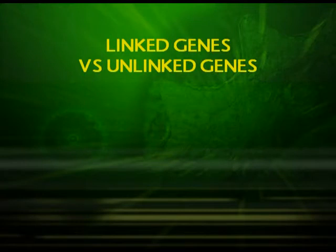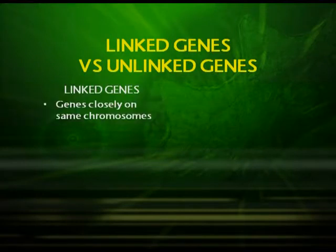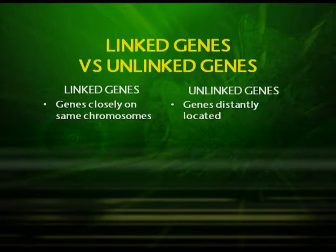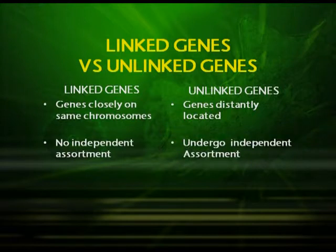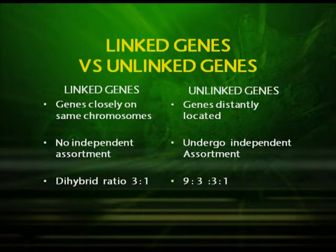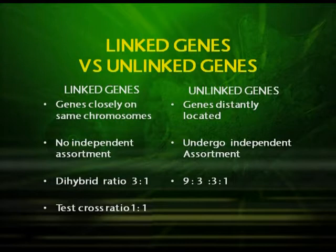We can differentiate linked and unlinked genes: linked genes are closely located on the same chromosome with no independent assortment, giving a dihybrid ratio of 3:1 and a test cross ratio of 1:1. Unlinked genes are distantly located, show independent assortment, give a dihybrid ratio of 9:3:3:1, and a test cross ratio of 1:1:1:1.